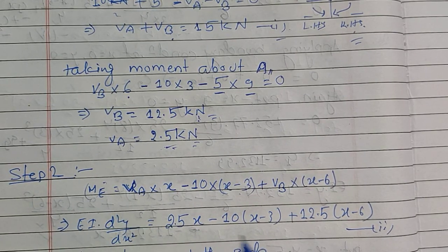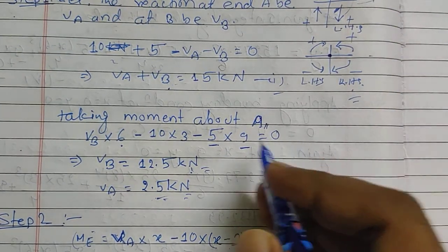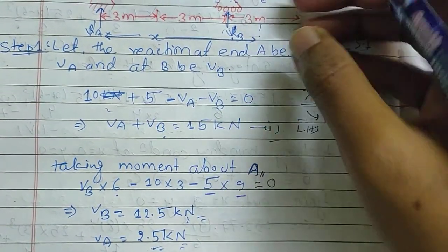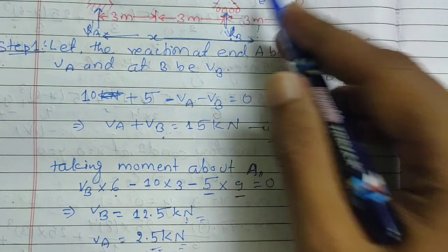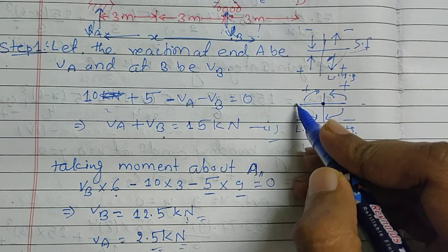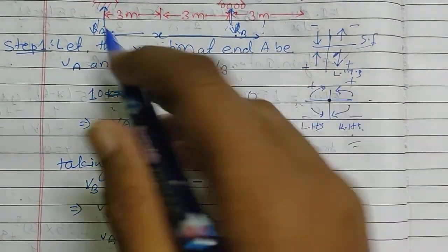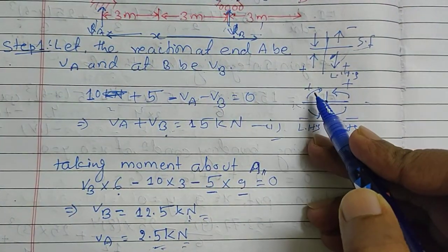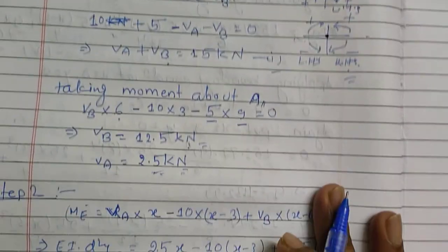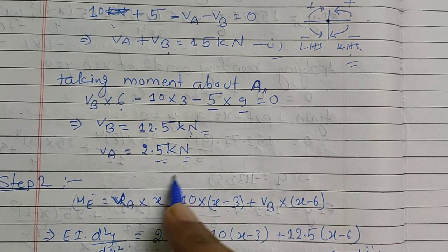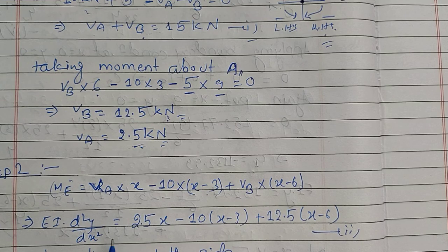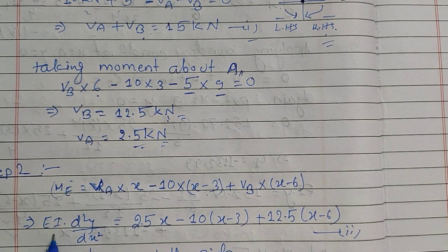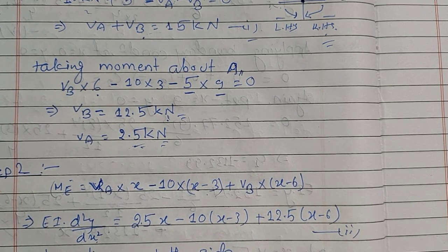The moment at E is ME = VA × x. VA creates a clockwise moment, which is positive. The 10 kN load acts downward and is negative. VB also acts upward, creating a clockwise moment, which is positive. In Macaulay's method, we equate the moment to EI × d²y/dx², giving us the governing differential equation.